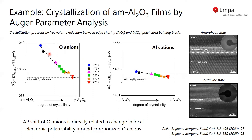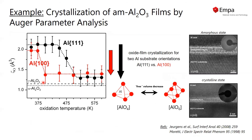whereas the densification and reduction of free volume is mainly proceeding in the oxygen sub-lattice. That is why we see the very strong change in the oxygen Auger parameter. We were even able to relate the shift of the Auger parameter of oxygen to the change in the local electronic polarizability.